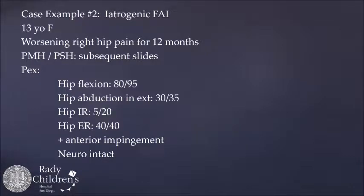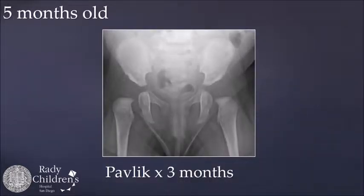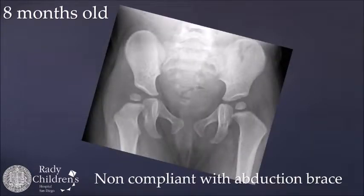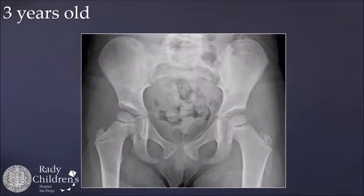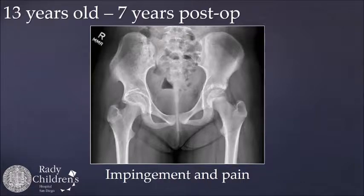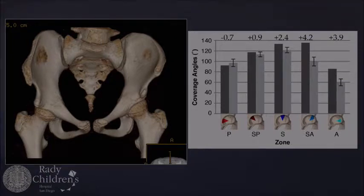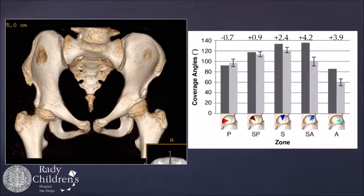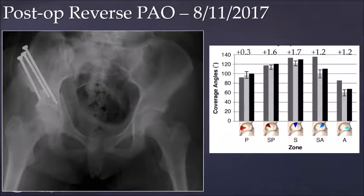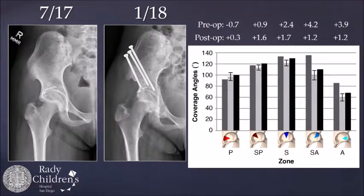Here's another patient — a 13-year-old with iatrogenic FAI and right-sided hip pain. She was treated at five months of age for a subluxated, dislocated hip on the right with a Pavlik harness. She was noncompliant with abduction bracing, had residual dysplasia at three, and underwent a Pemberton osteotomy at six. Seven years post-op, you can see significant retroversion or overcorrection of that acetabulum with impingement and pain. Her pre-op CT scan shows she is primarily deficient in the superior anterior region with Z-scores of plus 4.2 and plus 3.9. She underwent a reverse PAO in August, and the post-CT measures show those regions have been corrected to within the normal range.